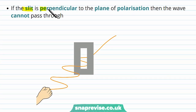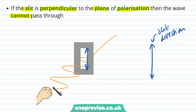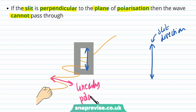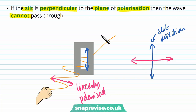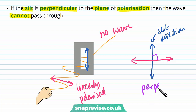If the slit is perpendicular to the plane of polarization, the wave cannot pass through. The wave is initially linearly polarized and only oscillates in one direction, but because that direction is perpendicular to the slit direction, no wave passes through — the slit blocks the wave completely.